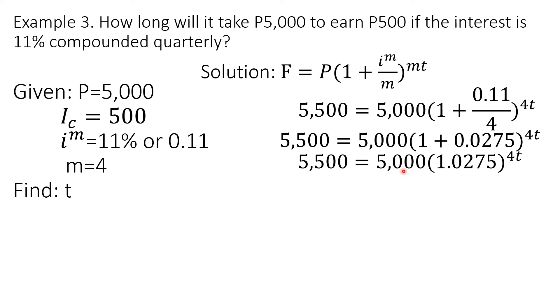We cannot just multiply these two, because this number is still raised to an exponent 4T. We will divide both sides by 5,000. So 5,500 divided by 5,000 is 1.1 equals 1.0275 raised to 4T.